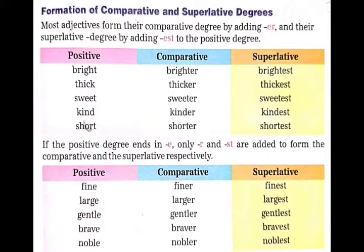If the positive degree ends in -e, only -r and -st are added to form the comparative and the superlative respectively. यदि positive degree के end में e होता है, तो हम comparative degree बनाने के लिए उसमें r को add कर देते हैं. और superlative degree बनाने के लिए -st को add कर देते हैं.